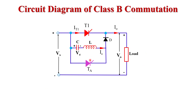Now the circuit diagram of Class B commutation: here we use VS supply voltage at the input side, two thyristors T1 and TA — T1 is the main thyristor and TA is the auxiliary thyristor. We connect an inductor and capacitor in series to make a resonant circuit, which generates a resonant current to turn off the main thyristor. We also use a diode D and a load.